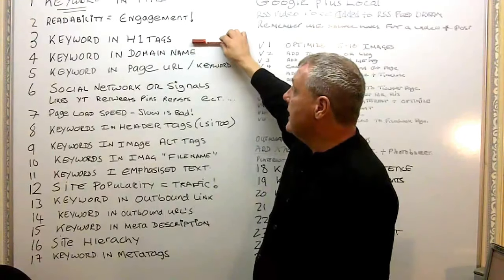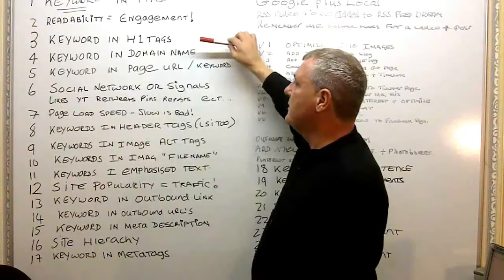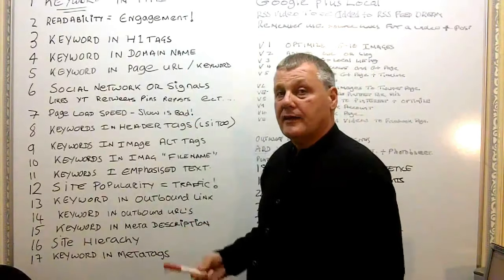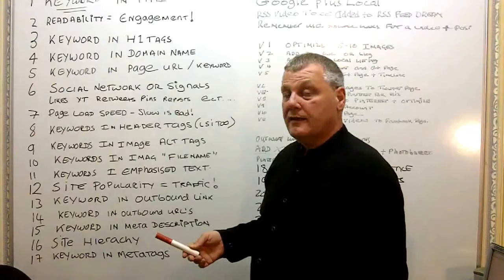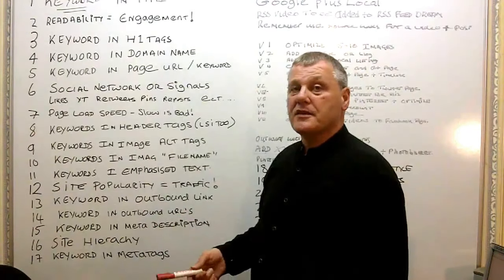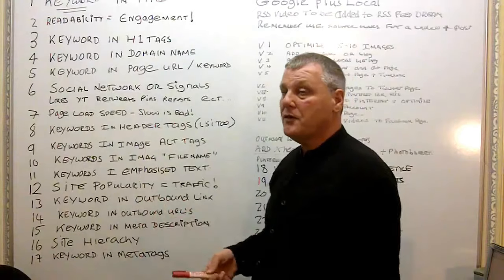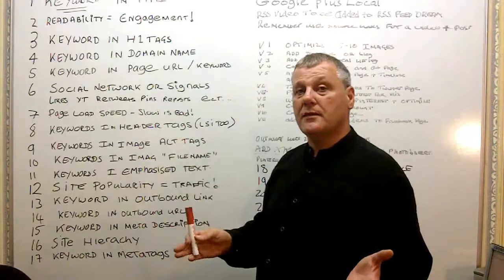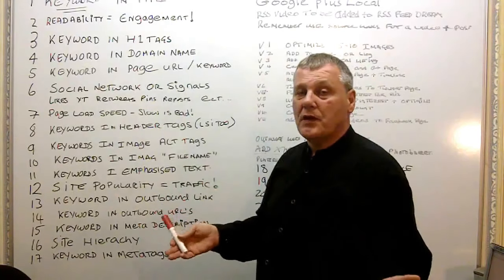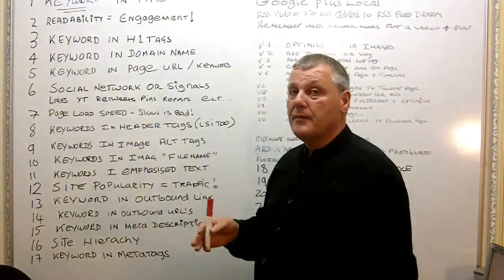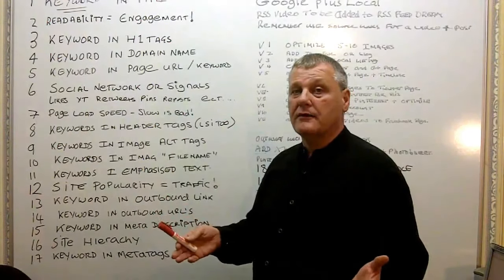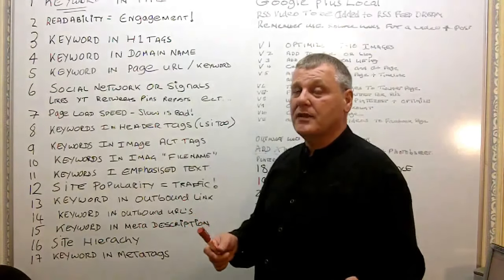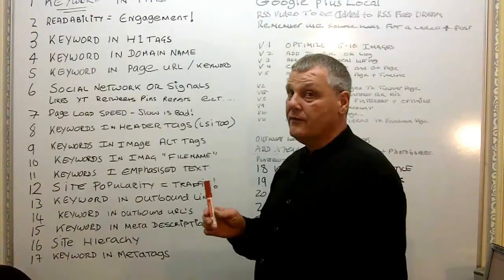Keyword in H1 tags — very, very important, so many people miss it, it's unbelievable. Keyword in domain name: I know a lot of people say it isn't that important, but just about every single one of my websites has a keyword in the domain and they all rank just fine. Google is still highlighting the keyword in the domain, so if it wasn't important, why would Google highlight it?